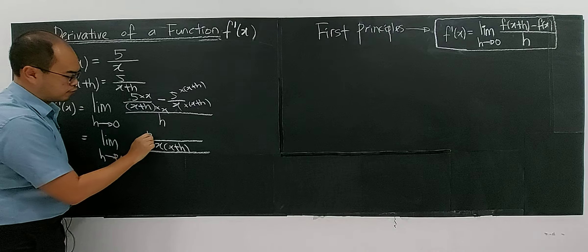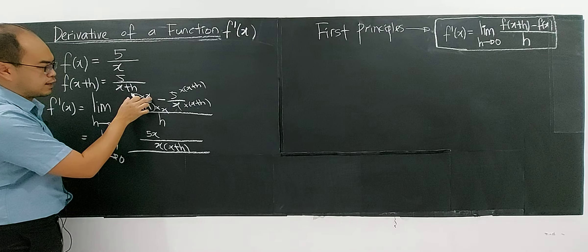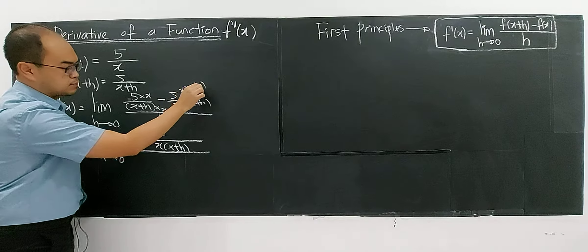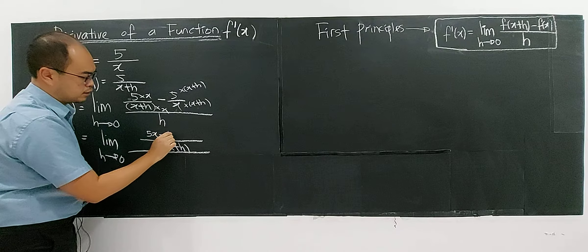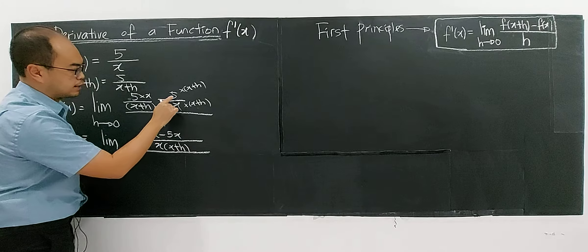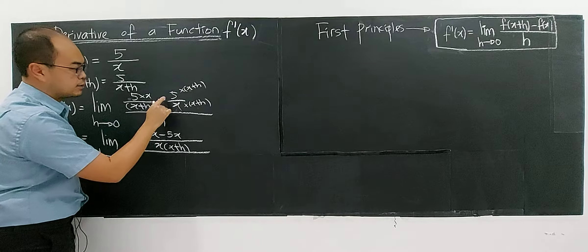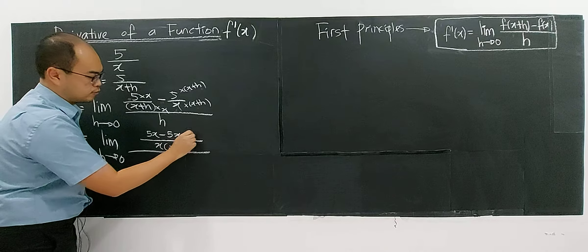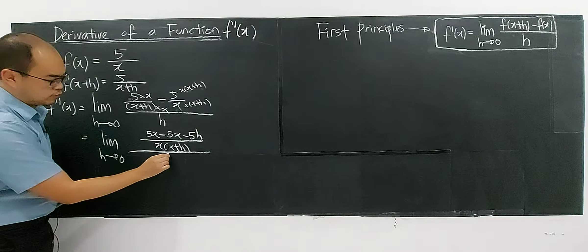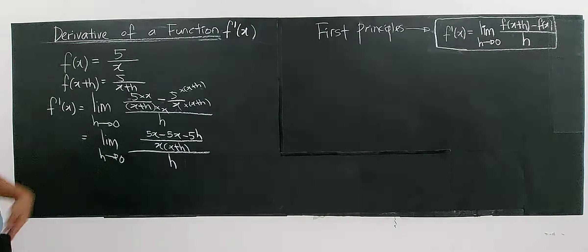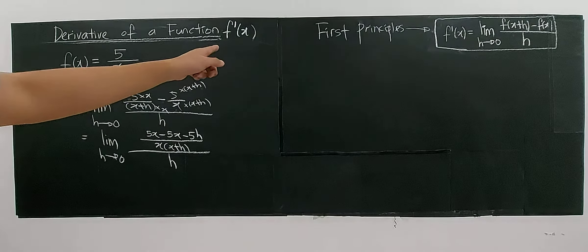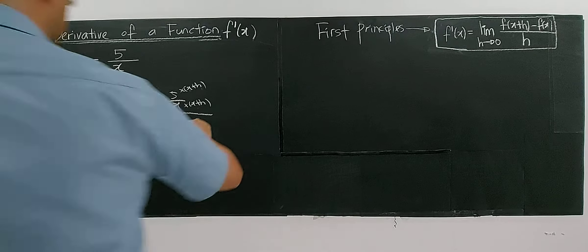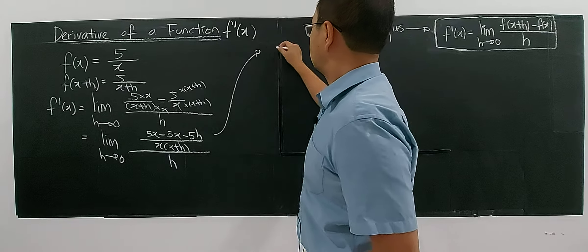On top we have 5x minus 5(x+h). Expanding the bracket gives negative 5x minus 5h. So the numerator is 5x minus 5x minus 5h, all divided by h. Let's continue to simplify.